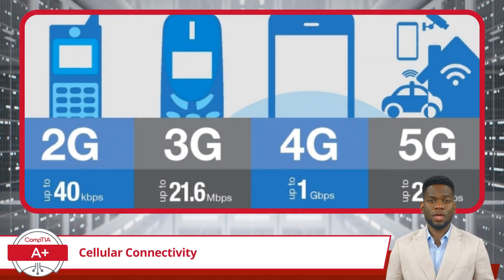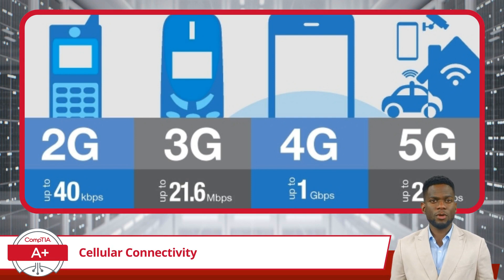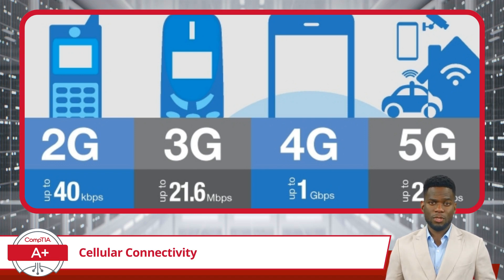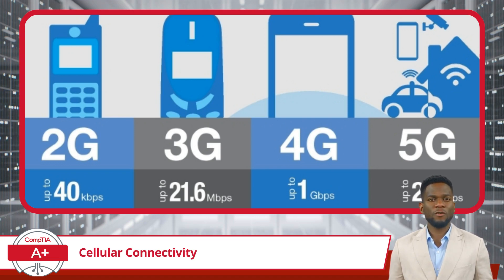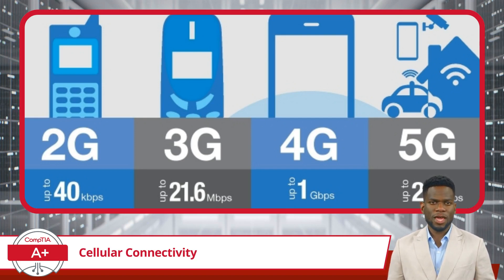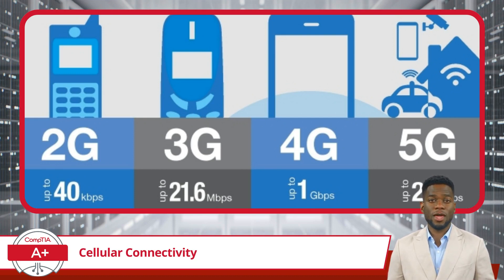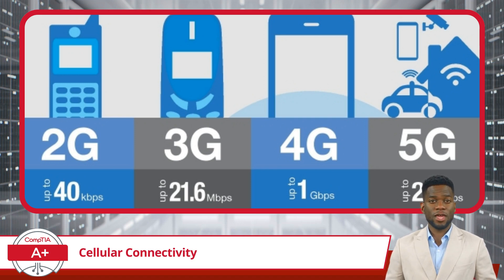Now, let's break down the generations of cellular technology. 2G, or second generation, was one of the earliest forms of mobile internet. It was sufficient for calls and basic texting, which was revolutionary in its time, but it's quite slow by today's standards. Next came 3G, which brought speeds that made mobile web browsing and video streaming a reality. It was a significant leap from 2G, offering faster data transfer rates and improved capacity.